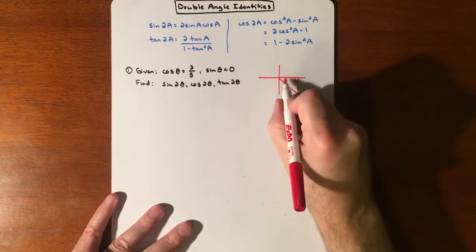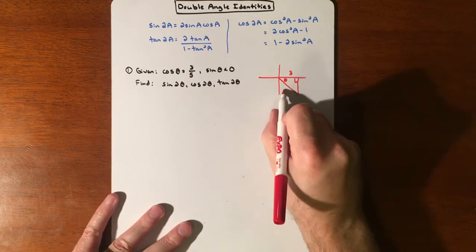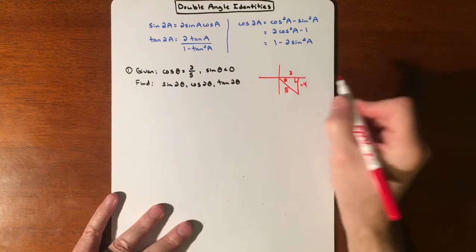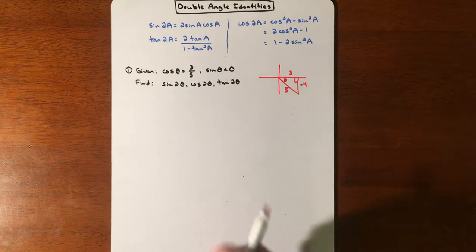For our picture, cosine is 3/5 which is adjacent over hypotenuse, and sine is -4/5. So cosine being positive and sine being negative is going to be down in the fourth quadrant. That makes this a 3-4-5 triangle but we're going down, and our original angle is θ.